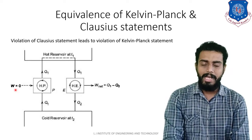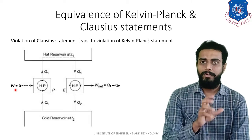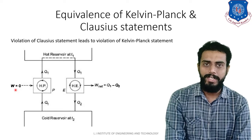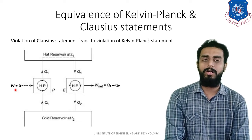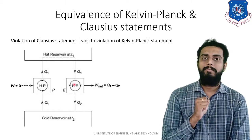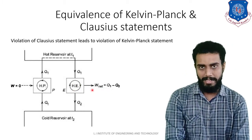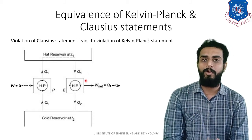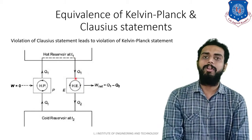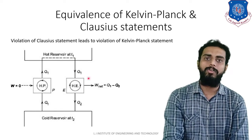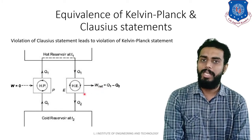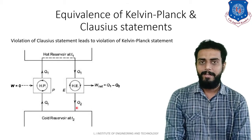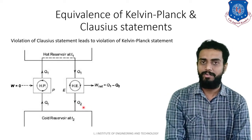We also have a heat engine. The function of the heat engine is to produce net work with the help of heat supply. This heat engine receives Q1 amount of heat from the T1 temperature reservoir, produces W net amount of work, and rejects Q2 amount of heat to the cold reservoir at T2. That is how this heat pump and heat engine are working together.